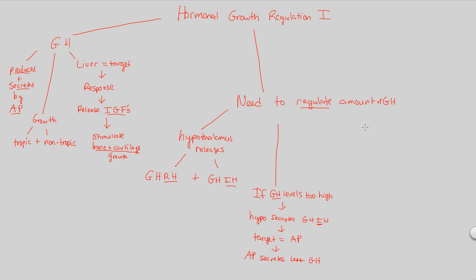And then, we can round this discussion out by stating that if we have the opposite—if GH levels are too low—what is the situation? What is the hypothalamic response and the anterior pituitary response? It's just the opposite. Nothing difficult here. We're just going to have the hypothalamus notice that things are too low.